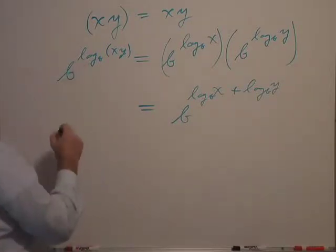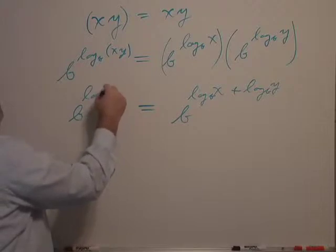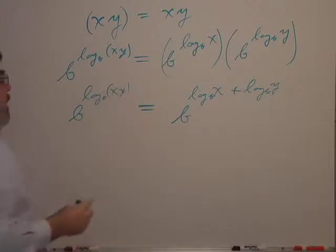And that ends up being b raised to the log x base b plus log y base b. So I simply multiplied and added exponents over there. And we won't change anything over here. This is still b to the log base b of xy.